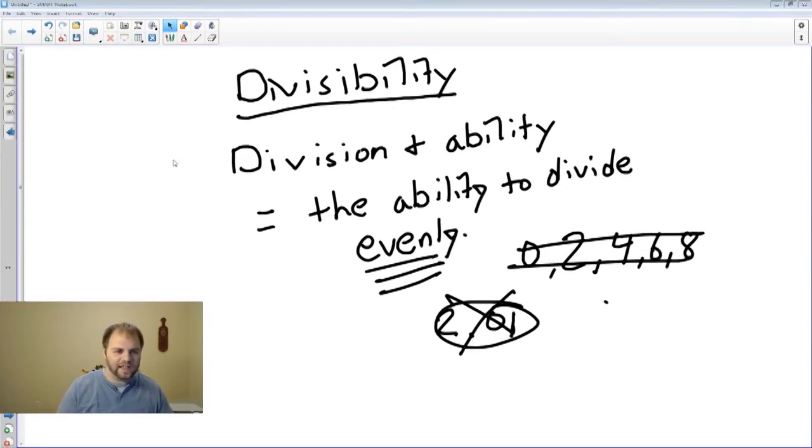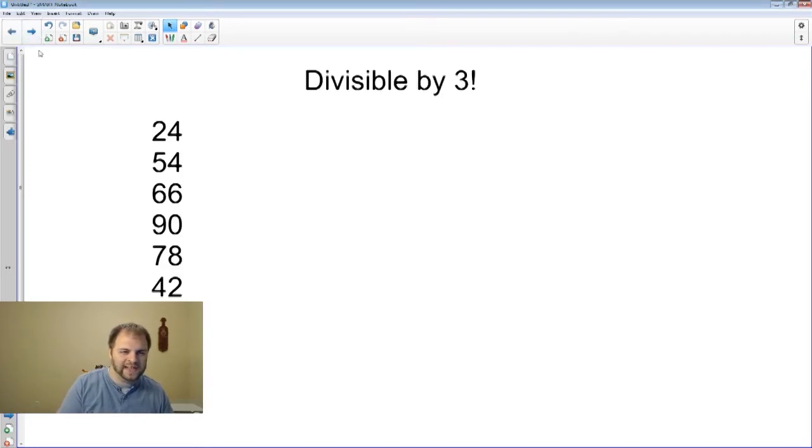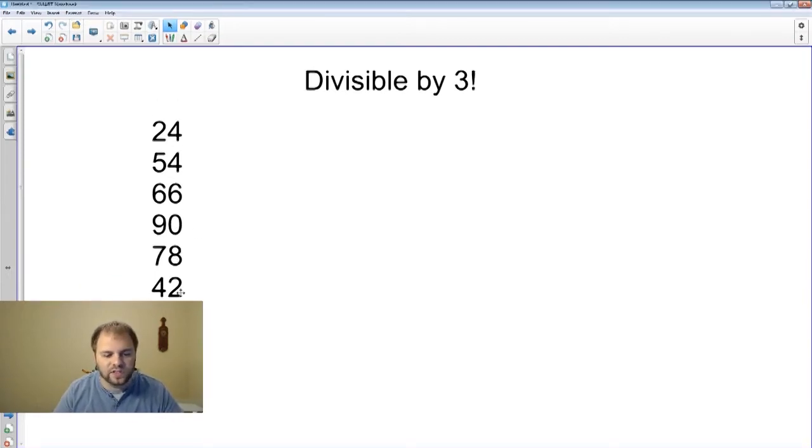Let's remember that divisibility is the ability to divide evenly. No remainder, no decimal. Now let's take a look at the first one: divisible by three. We want to find out a rule, something that's in common amongst these numbers: 24, 54, 66, 90, 78, 42, 912, 918, 993.